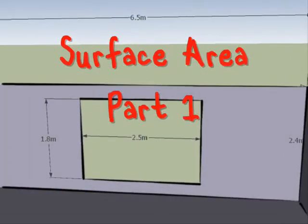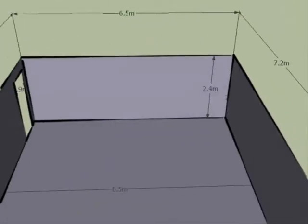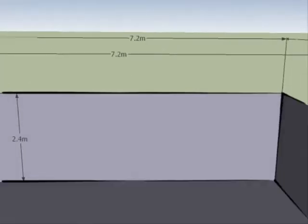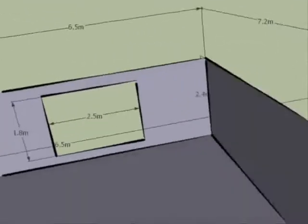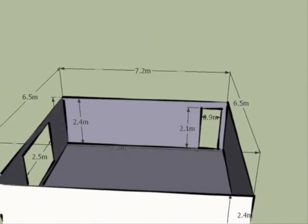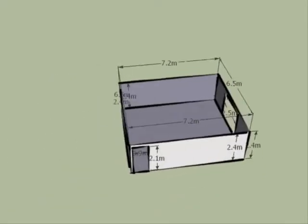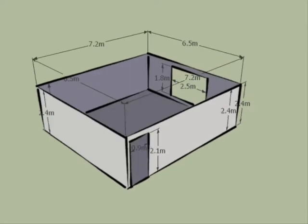Hello and welcome to my video on surface area. The problem we're going to be dealing with here is working at the surface area of the walls of a house, taking into consideration and taking away the surface area that is contained by the doors and the windows. This is a problem that you might get if you were painting the house and you had to work out how much area you actually had to paint.